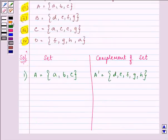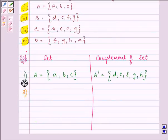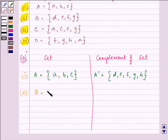Similarly, for the second part, we need to find the complement of B. The elements of B are D, E, F, G.